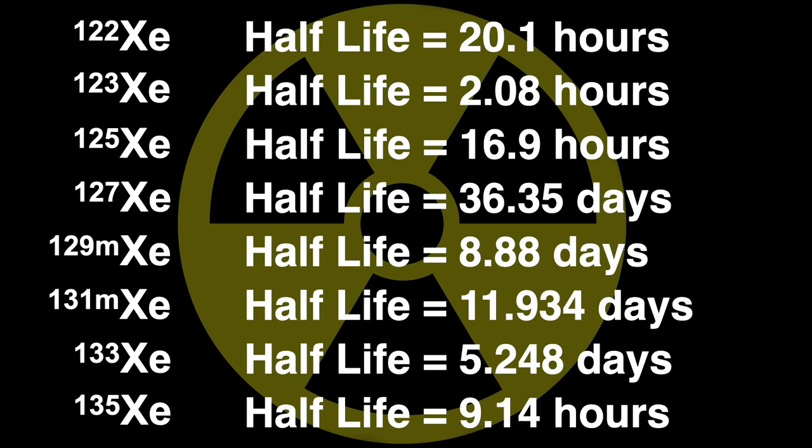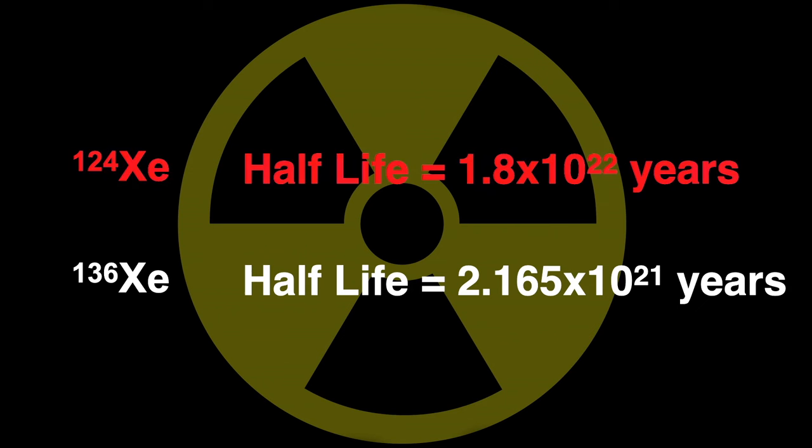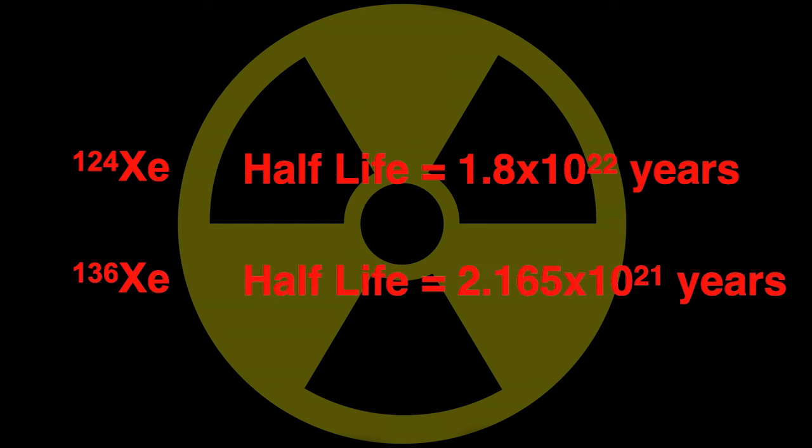Remember I said that xenon has nine stable isotopes? That may have been a bit of an exaggeration. Actually, two of those nine isotopes are very, very slightly radioactive with tremendously long half-lives. Xenon 124 has a half-life 1.3 trillion times the age of the universe. Essentially stable.